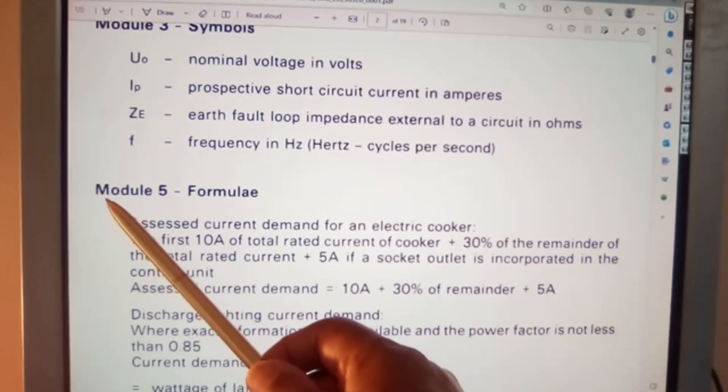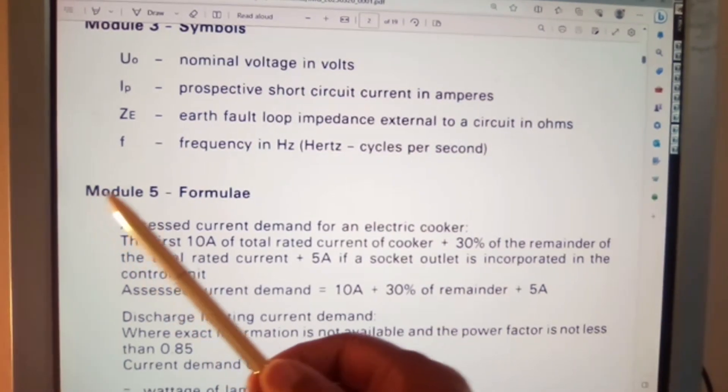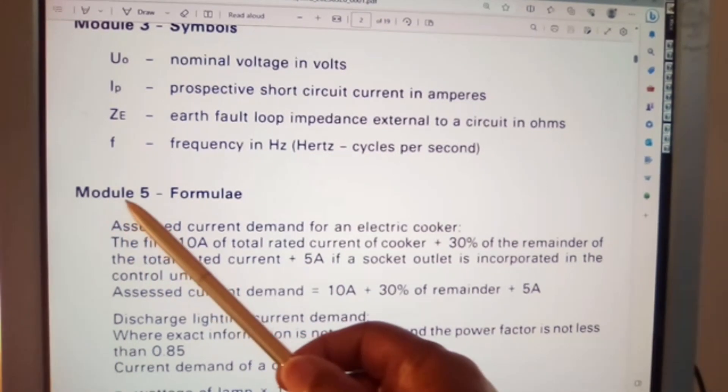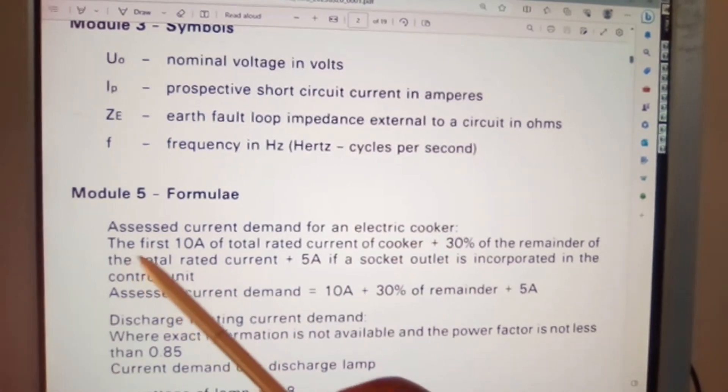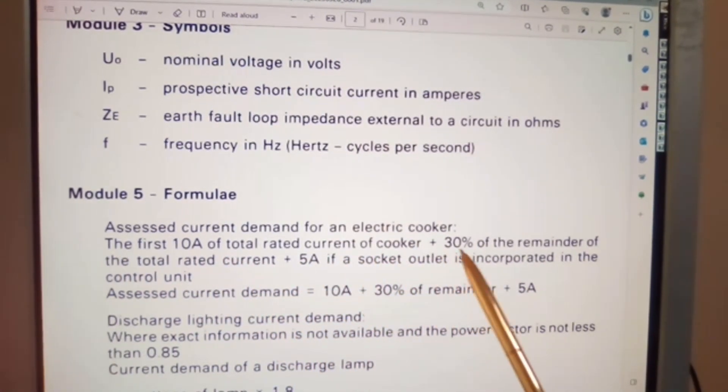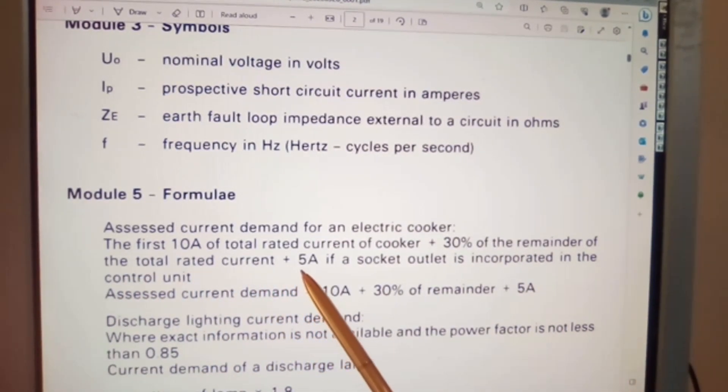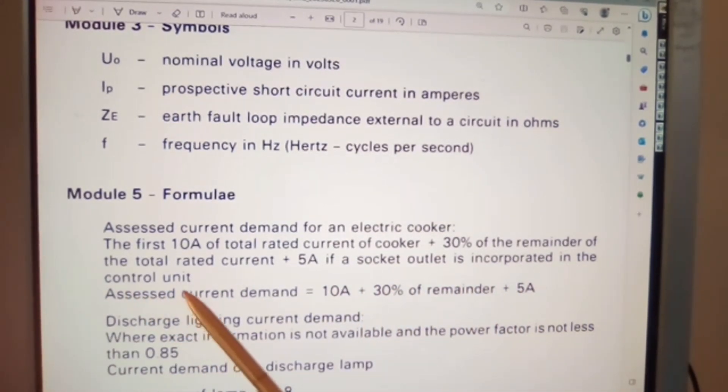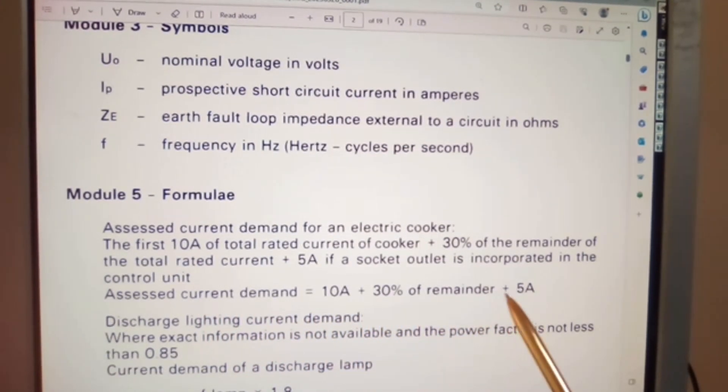Now Module 5, ignore the modules in this case because they're not relevant. It's only to give us a guide as to what section we're dealing with at a given point in time. Module 5 formulae: assessed current demand for an electric cooker. The first 10 amps of total rated current of cooker plus 30% of the remainder of the total rated current plus 5 amps if a socket outlet is incorporated in the control unit. Assessed current demand equals 10 amps plus 30% of the remainder plus 5 amps.